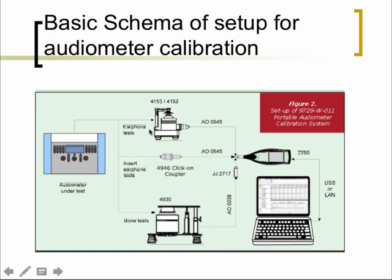This would be an artificial ear used for supra-aural headphone calibration. This is a 2cc coupler used for insert earphones — it's quite simple, looking like a standard metal cylinder of a known volume, in this case 2cc, which simulates the volume between the tympanic membrane and the end of the insert earphone. The volume is lesser with an insert earphone versus a supra-aural headphone, hence just 2cc. You also don't have to simulate headband tension, making it a simpler apparatus.